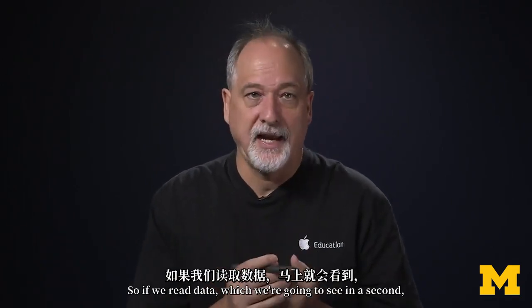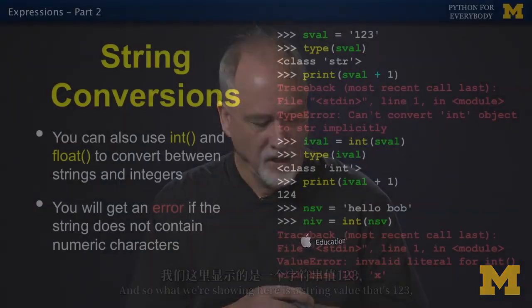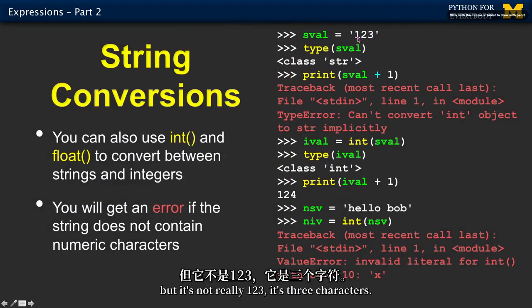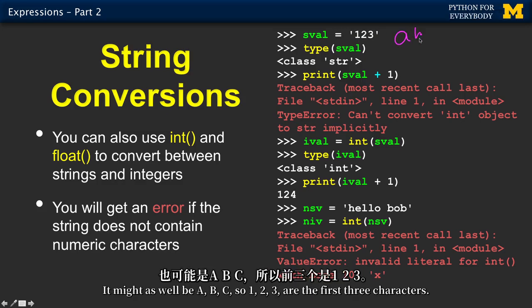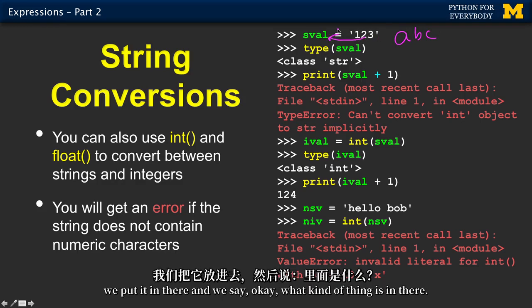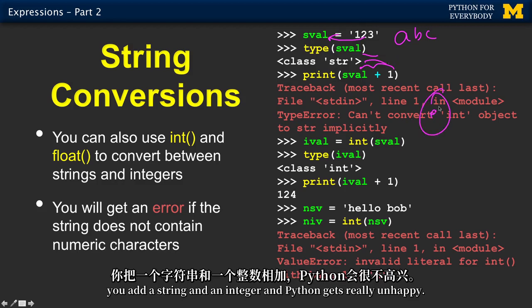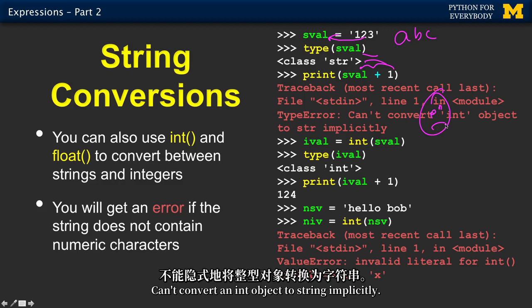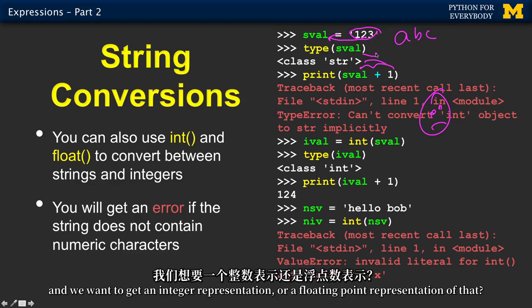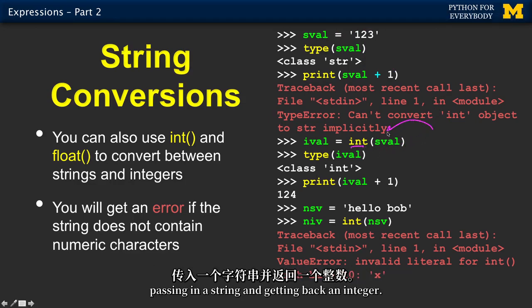String conversions. So if we read data, which we're going to see in a second, from the outside world, it comes in as strings. Whether reading from a network or from a database, we tend to get these things as strings. And so what we're showing here is a string value that's 123, but it's not really 123. It's three characters. It might as well be A, B, C. So 123 are the first three characters. So we take this string constant, we put it in there, and we say, okay, what kind of thing is in there? It's a string. And if we try to add one to it, as we saw before, you add a string and an integer, and Python gets really unhappy. Can't convert int object to string implicitly. But what if we know that inside of this string are actually digits, and we want to get an integer representation or a floating point representation of that? Well, in that case, we can call the int function or the float function, passing in a string and getting back an integer.